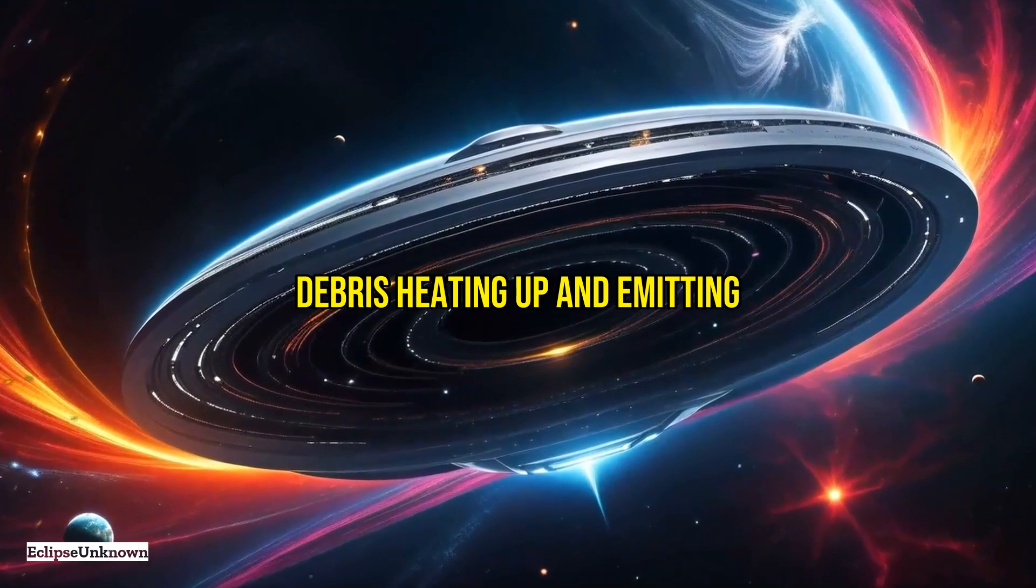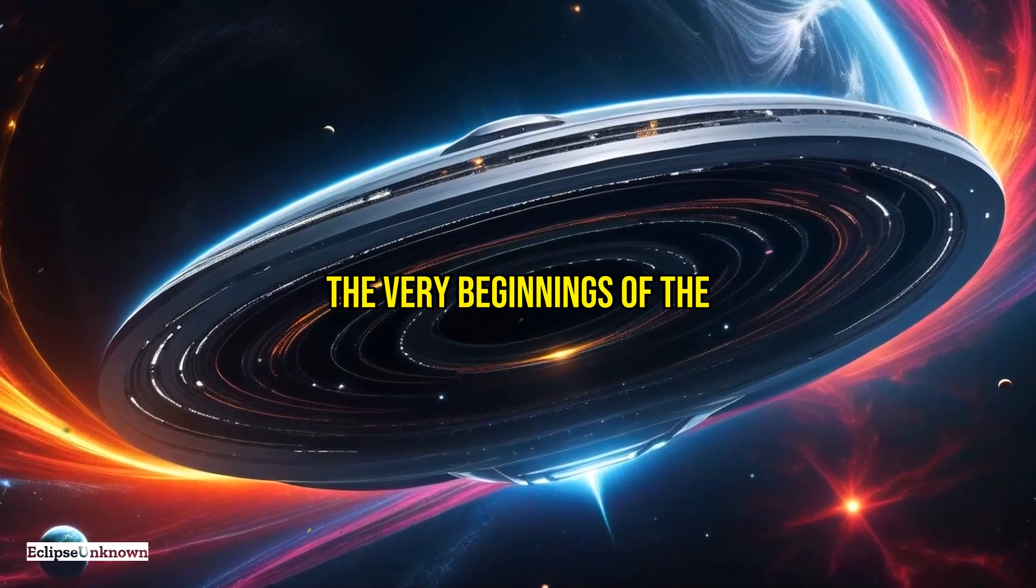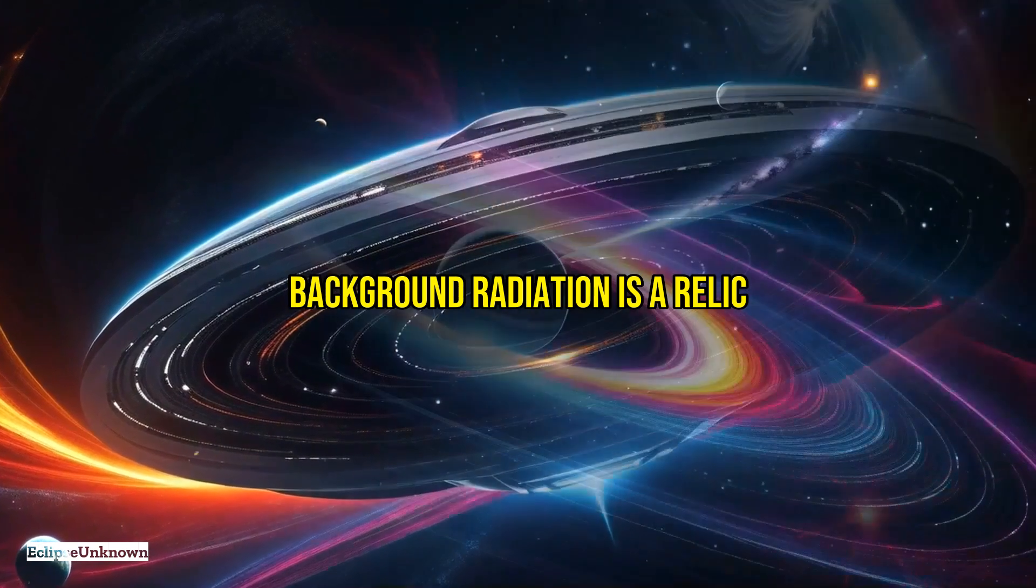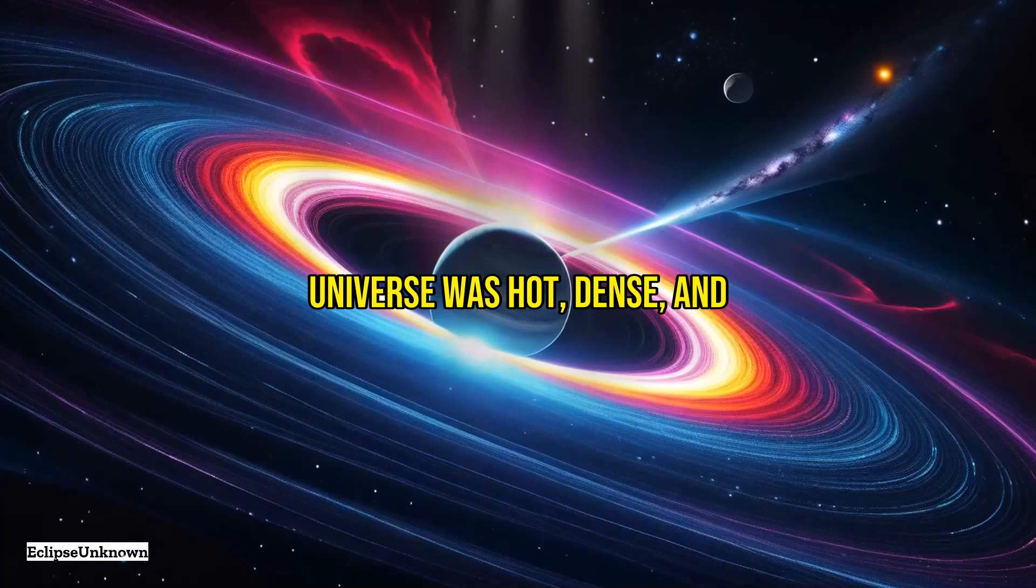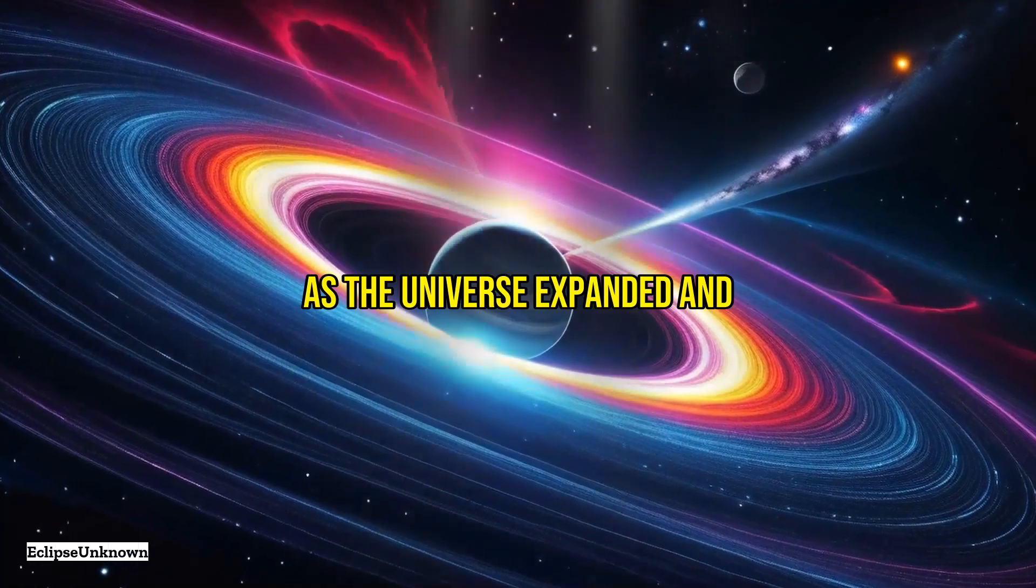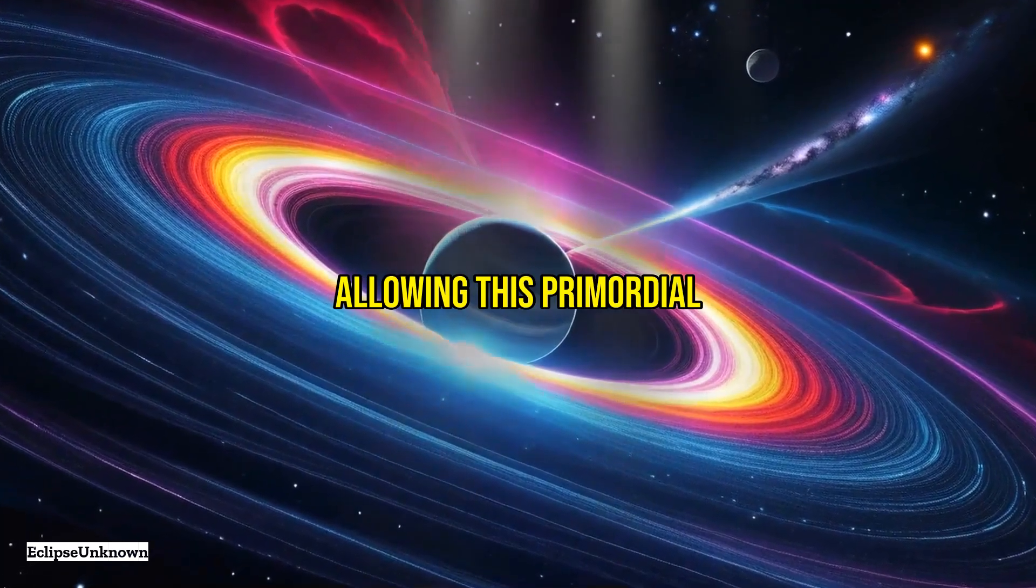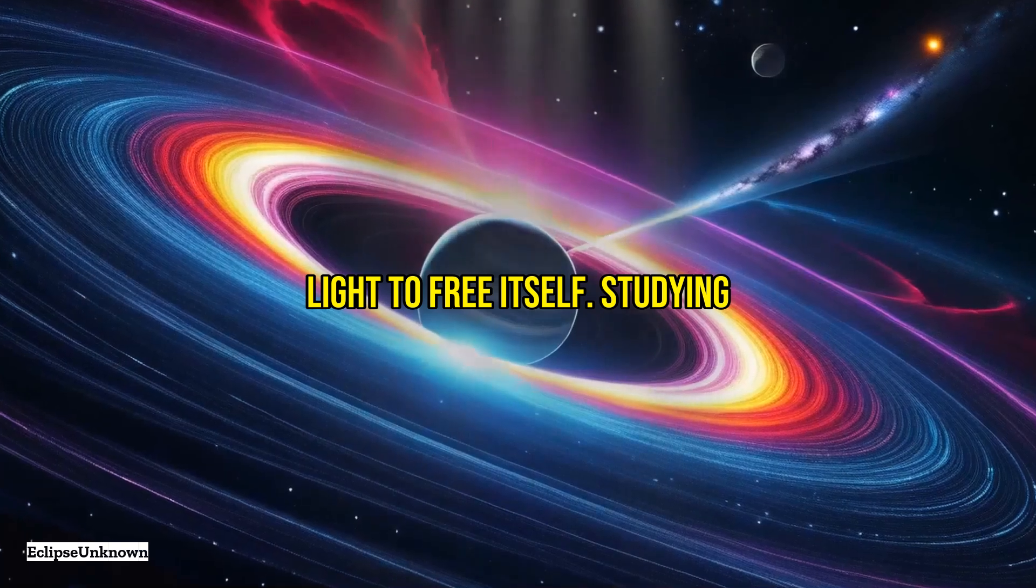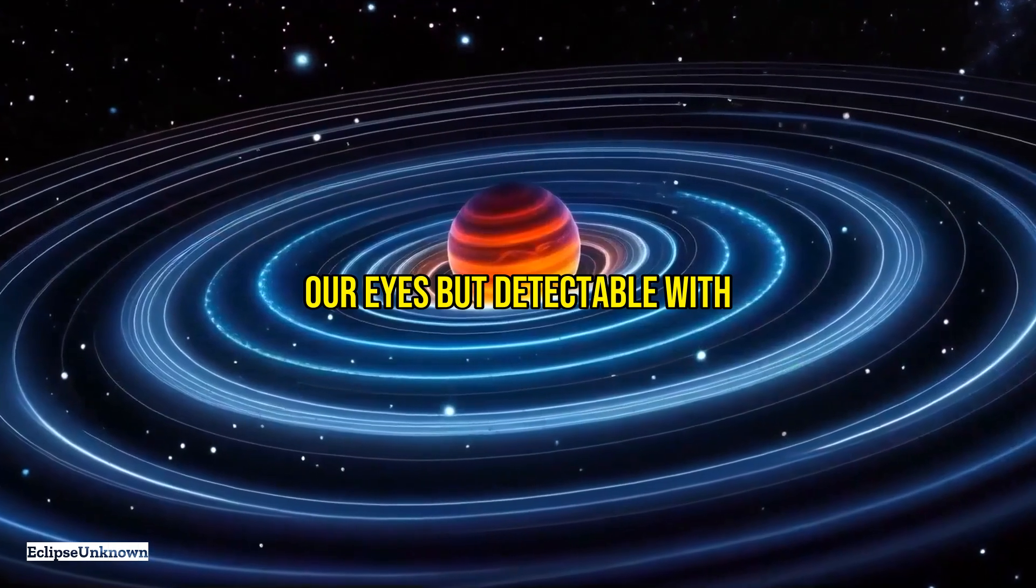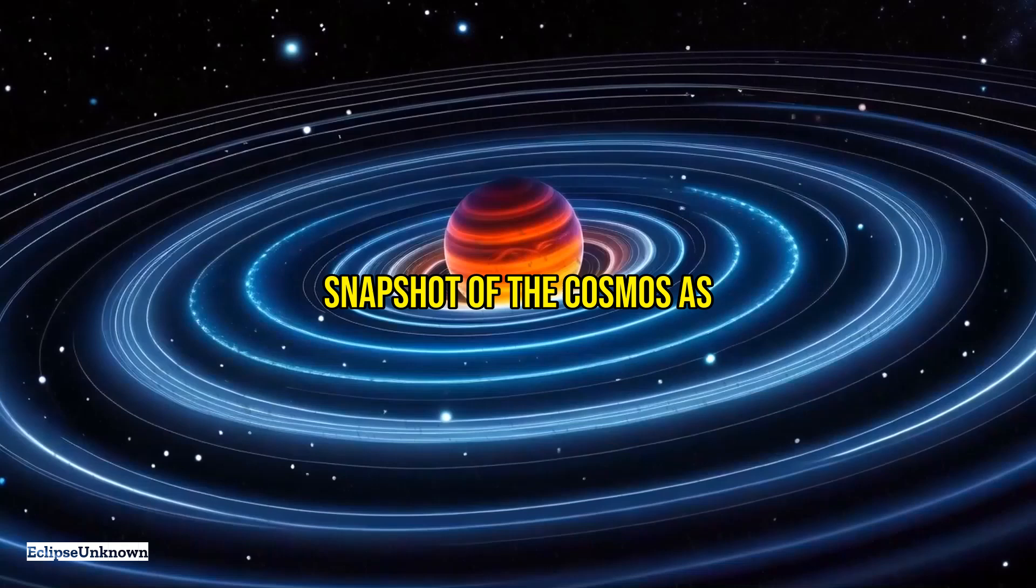What about the very beginnings of the universe? The cosmic microwave background radiation is a relic from a time when the universe was hot, dense, and completely opaque. As the universe expanded and cooled down, it became transparent, allowing this primordial light to free itself. Studying this ancient light, invisible to our eyes but detectable with specialized instruments, gives us a snapshot of the cosmos as it was nearly 14 billion years ago, seeding the structures we see today.